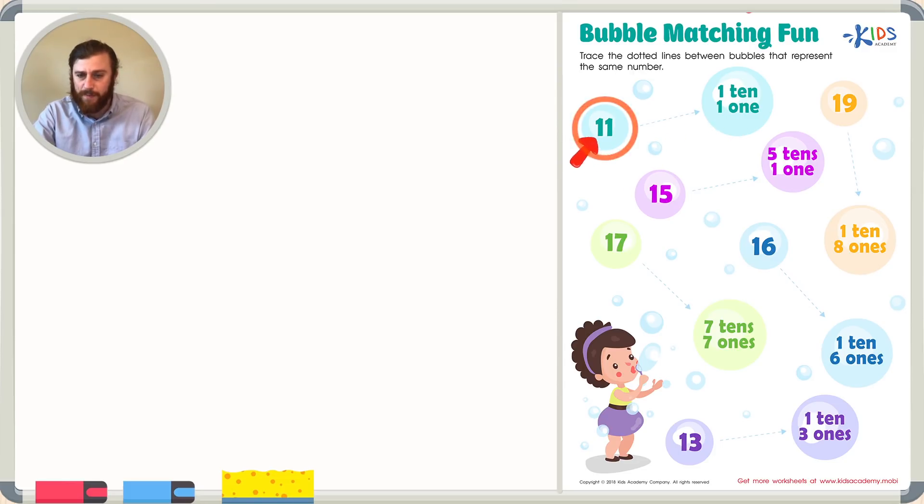I see the number 11, and it's represented by 1 ten and 1 one. Let's write the number 11 and take a closer look. Well, if I set up my tens and ones place value chart, I see that in the ones place there's just 1. That's represented by 1 cube, or 1 one. It's written as the number 1, and we need it.